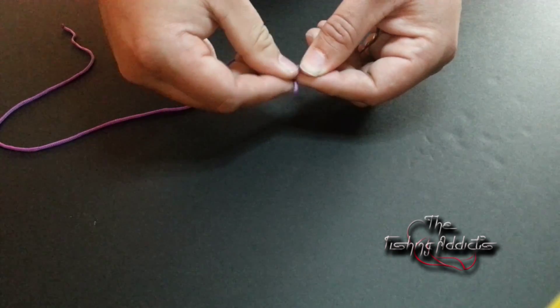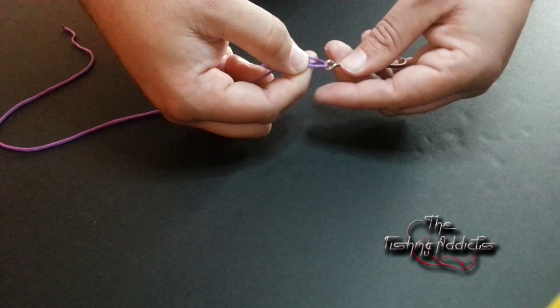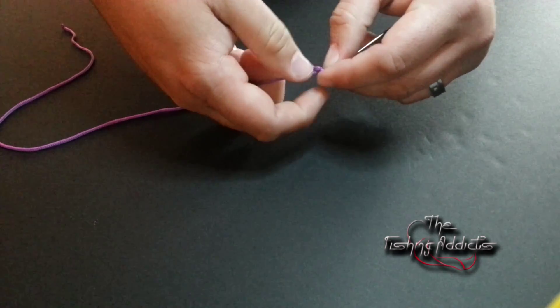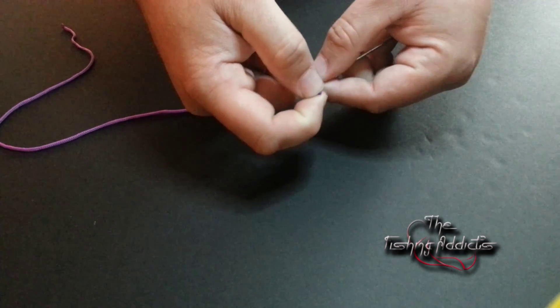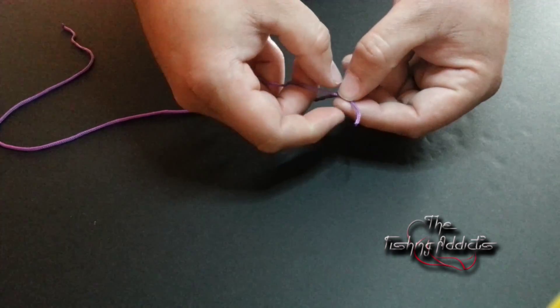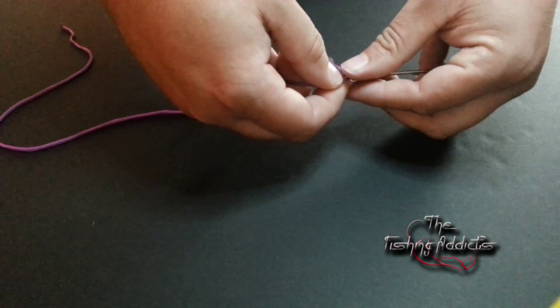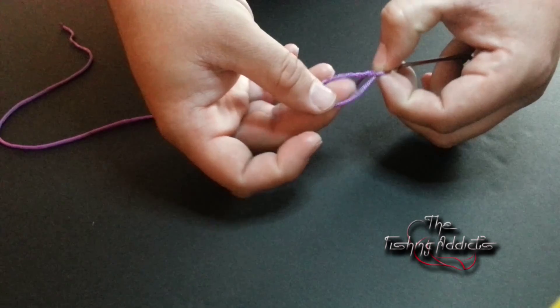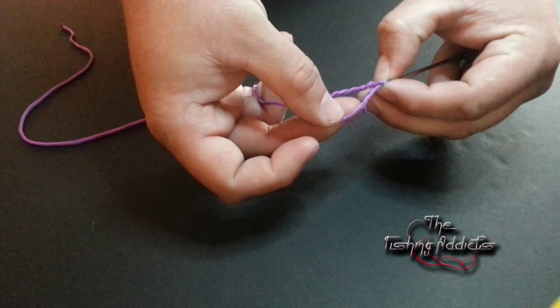Now with this tag end, you're going to come back up and go through the loop that you've created next to the eye of the hook. Then the next loop that you've created, you're going to take your tag end again.